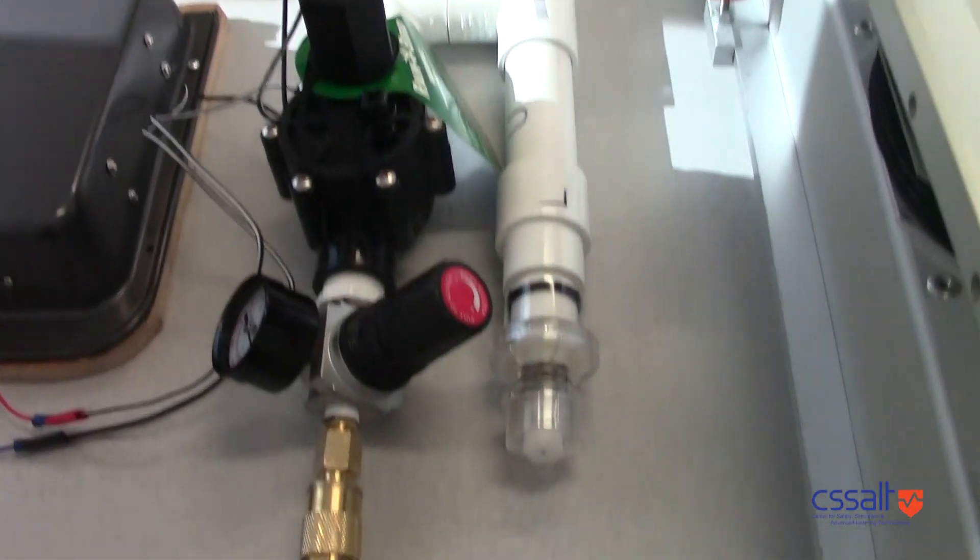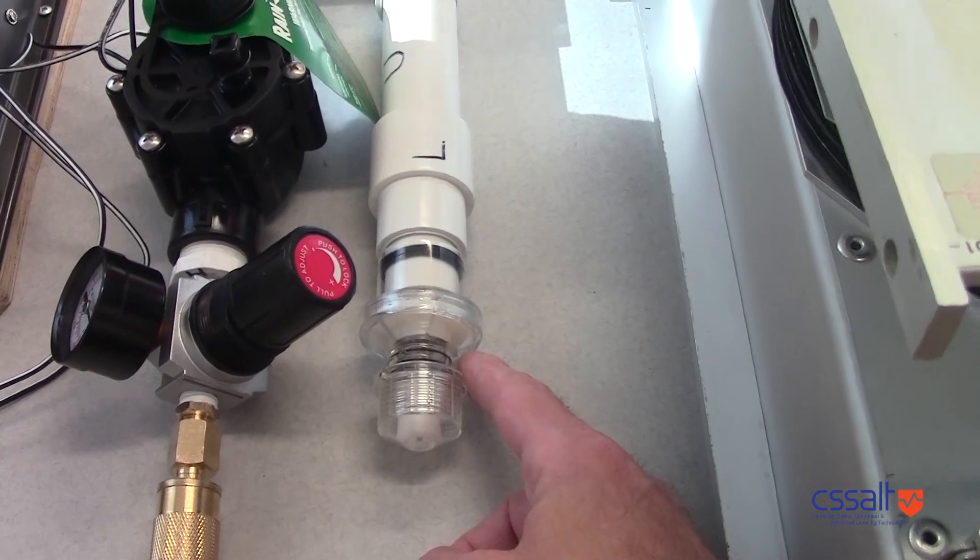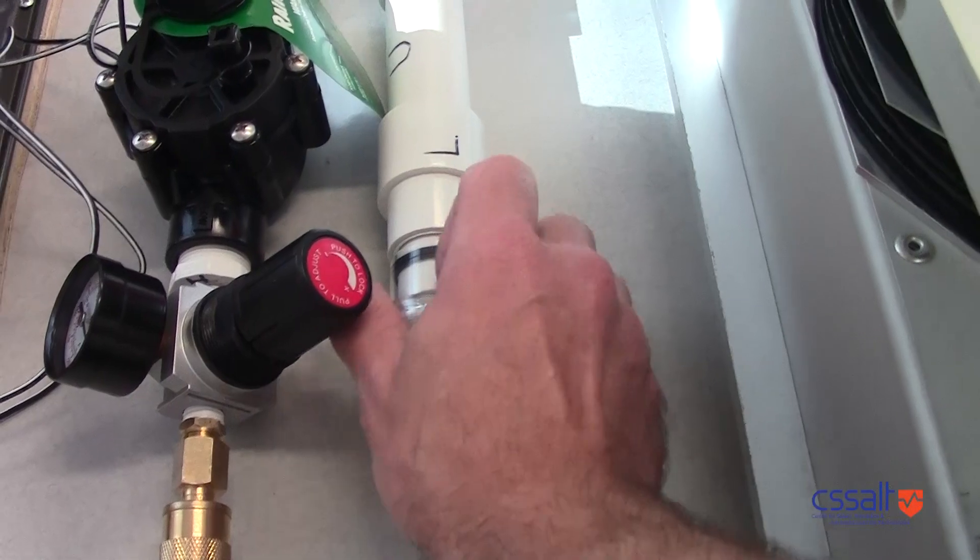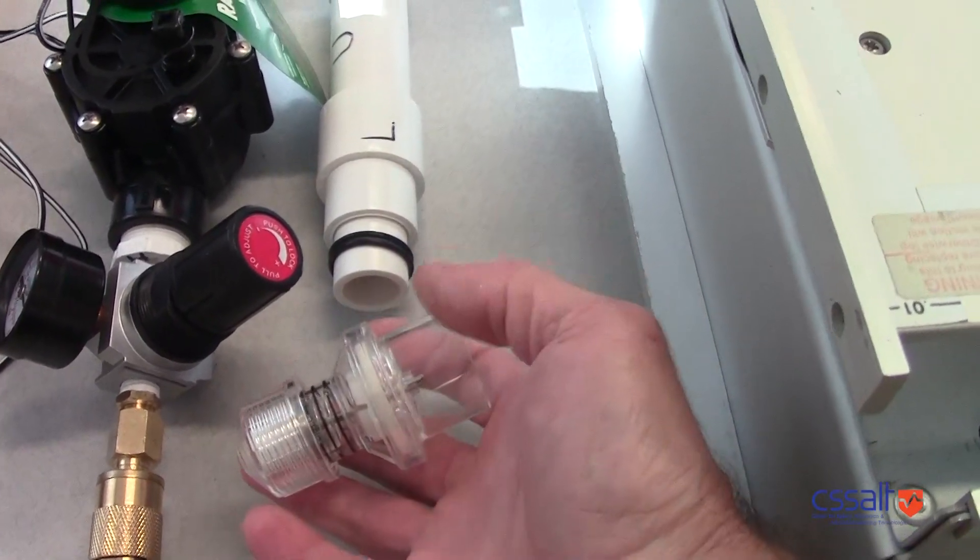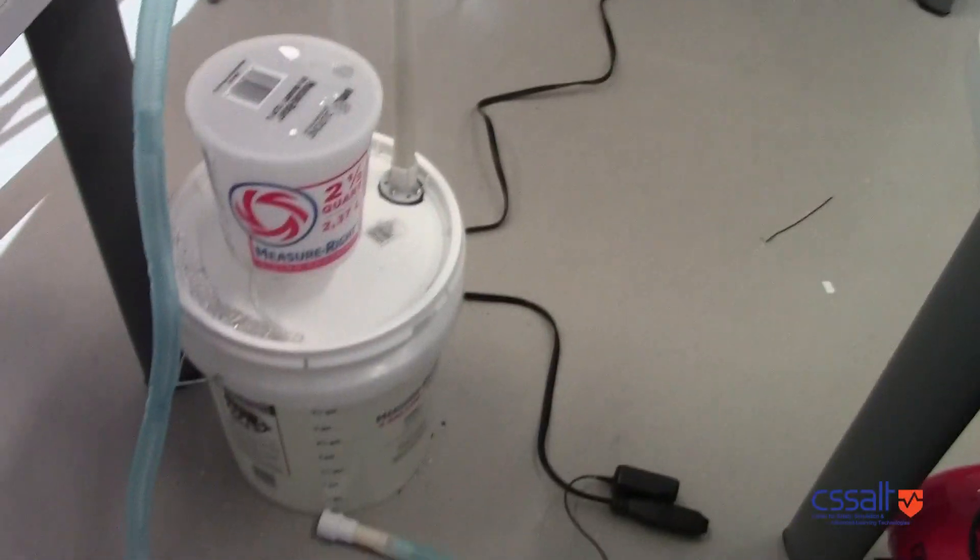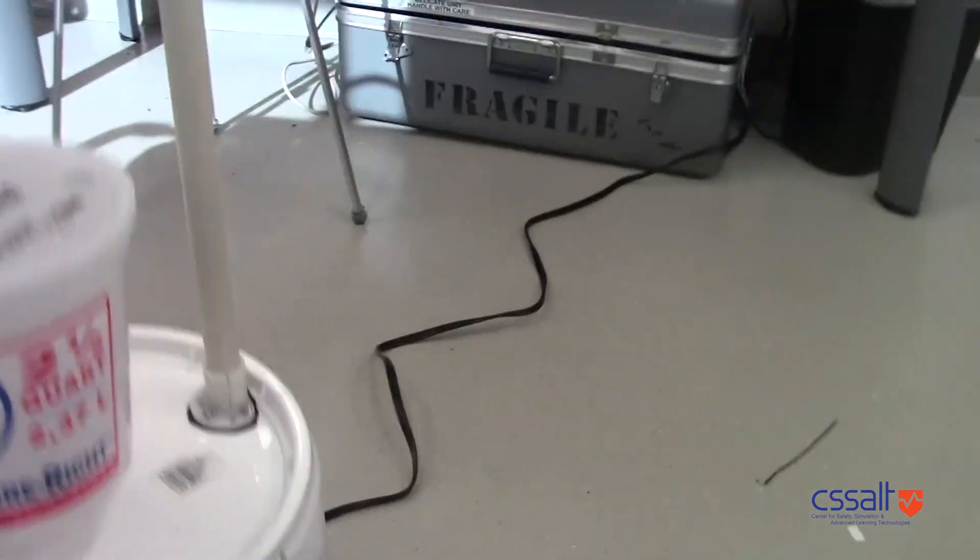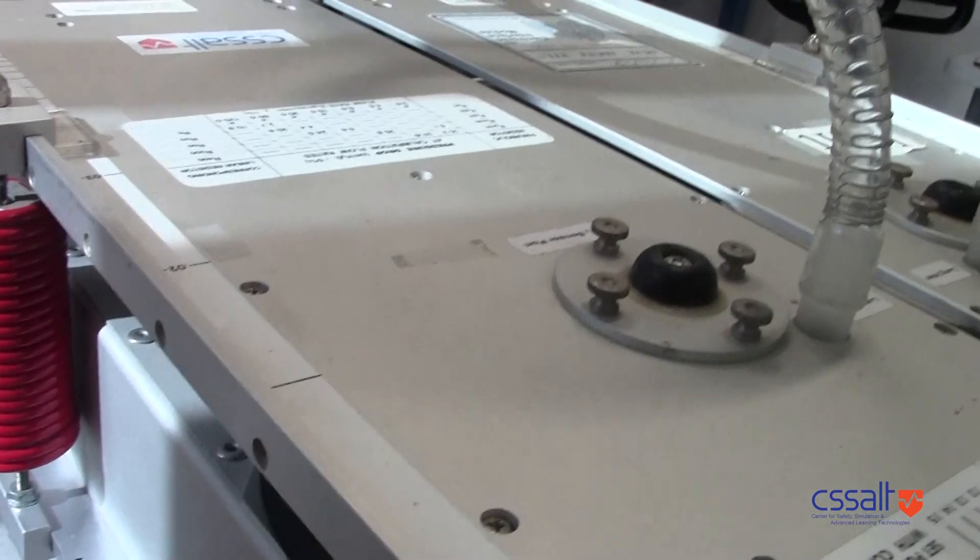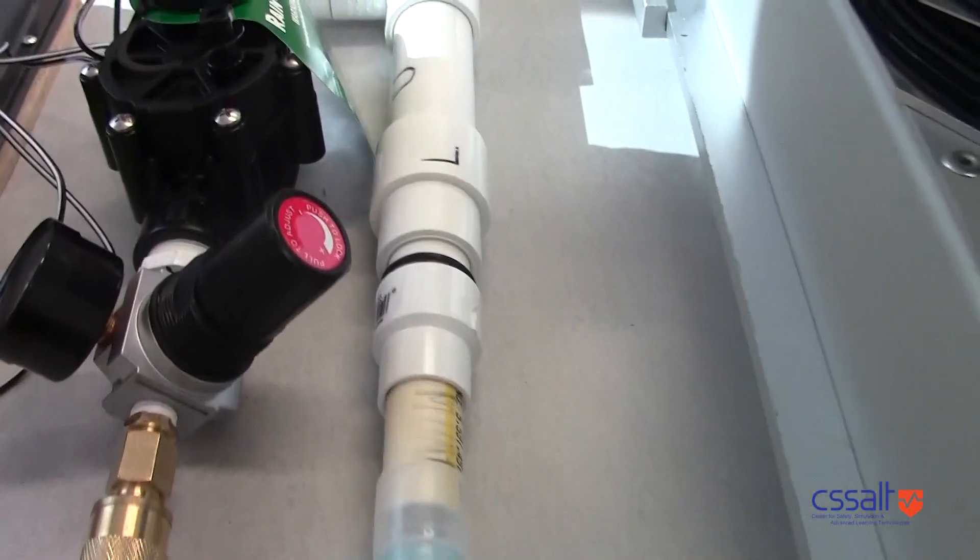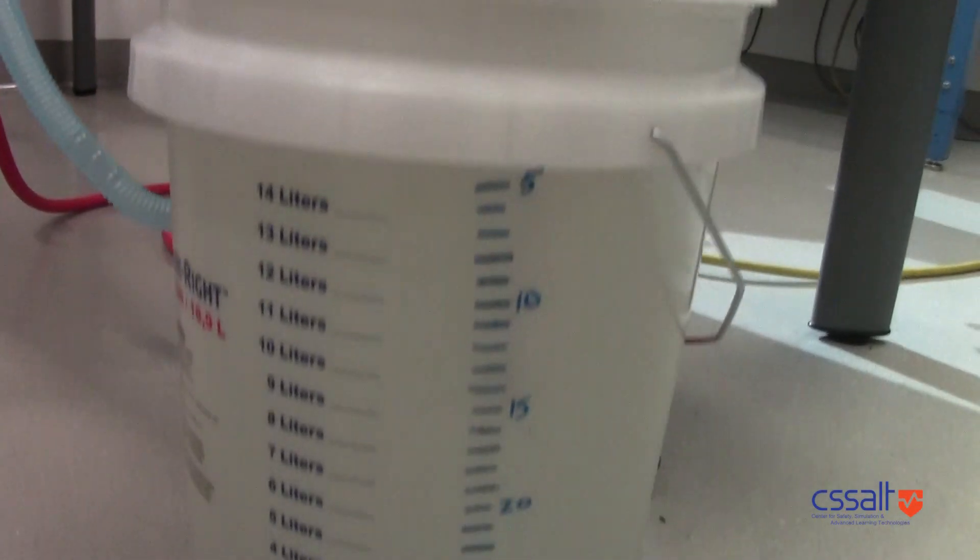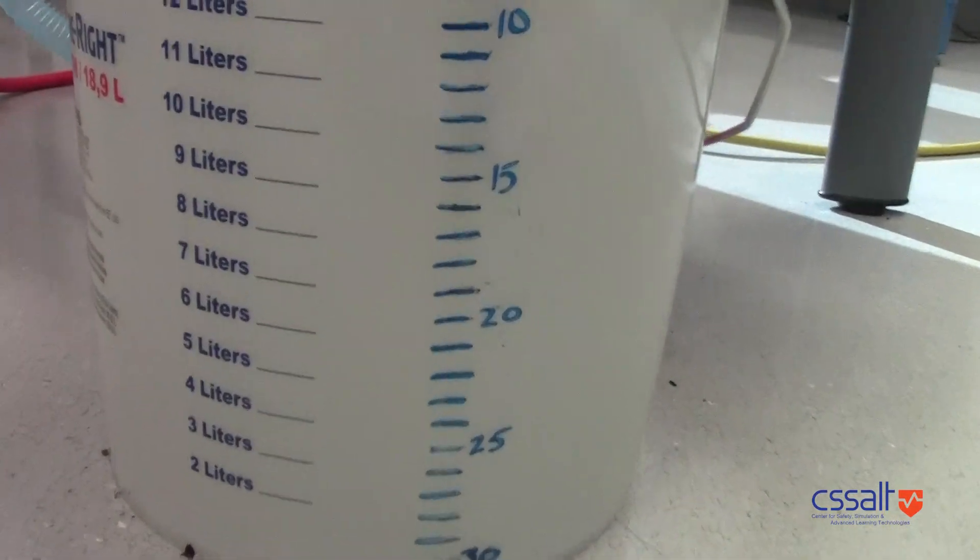PEEP can be controlled by adding a PEEP valve. If you want no PEEP, you can remove it. In the event that these become unavailable, we have a hydrostatic substitute where we exhale gas against a hydrostatic head of water. 15 centimeters of PEEP.